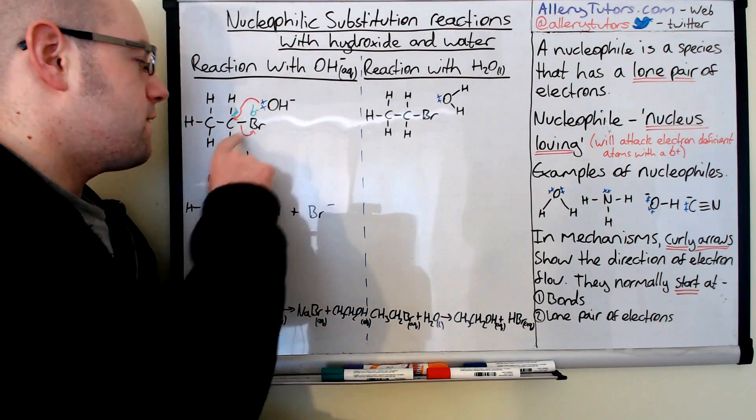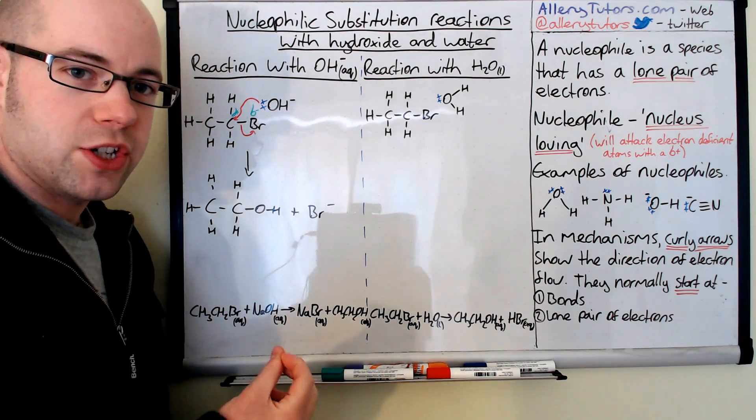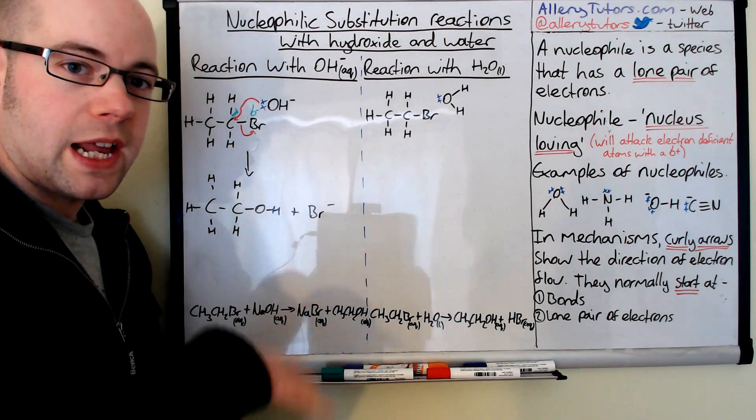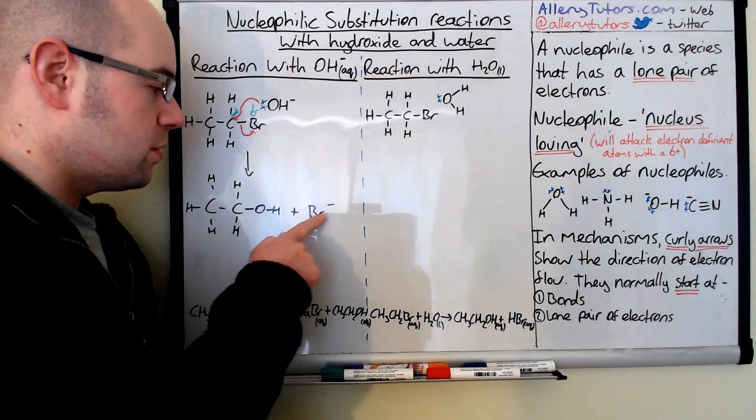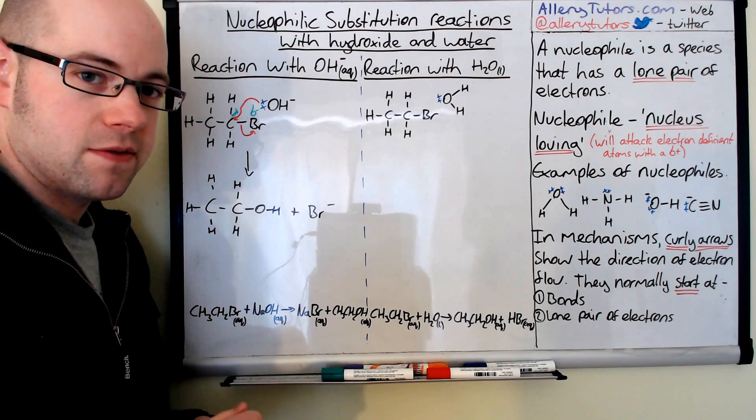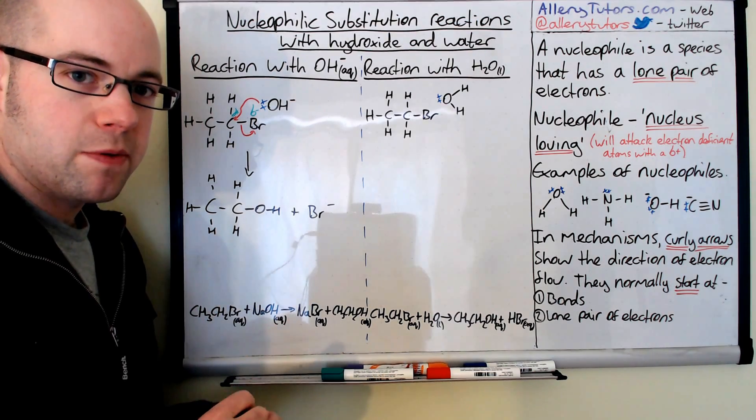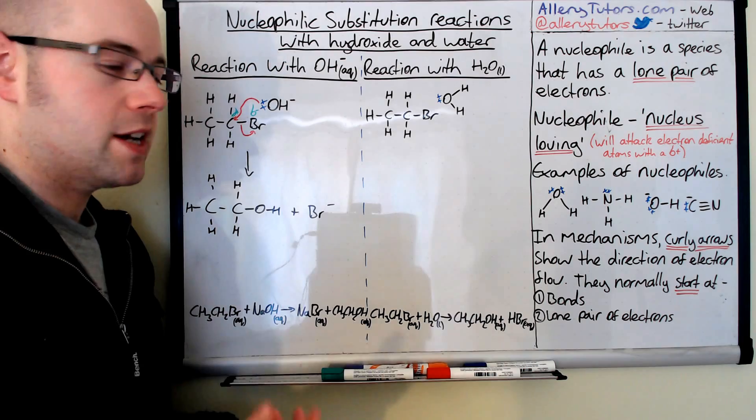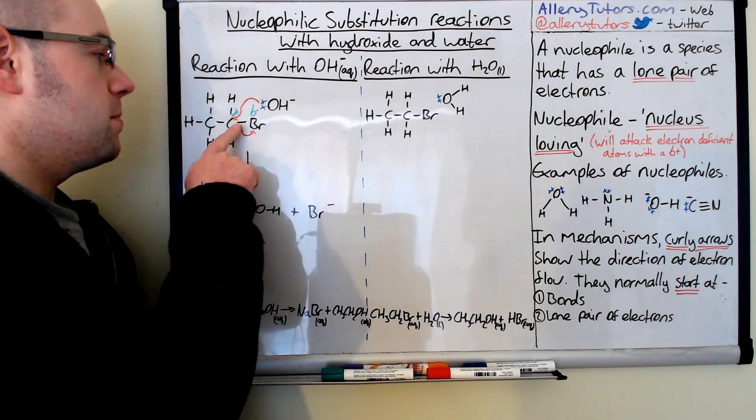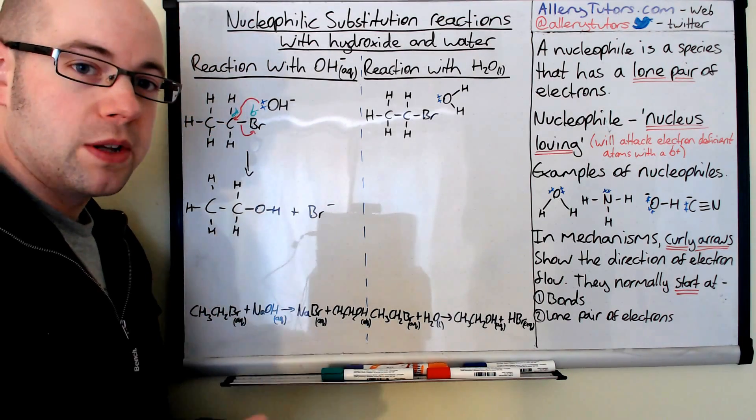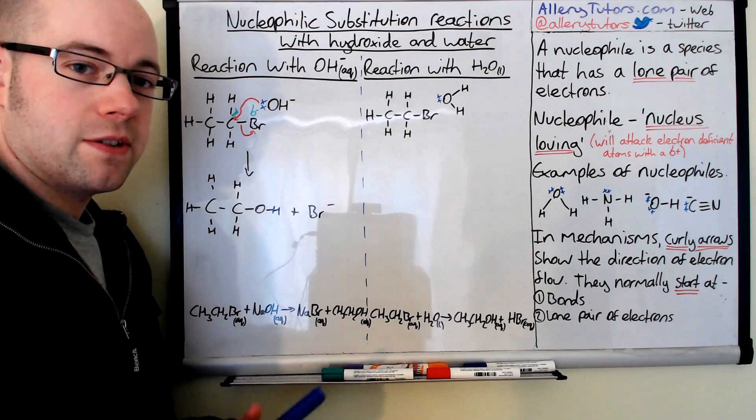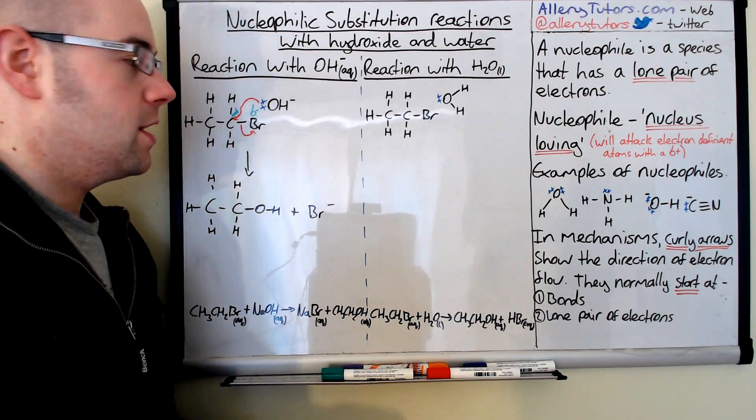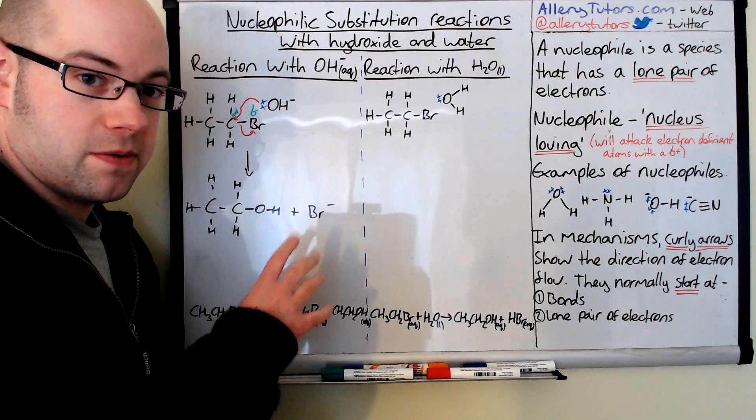We call this a fission reaction, bond fission. This is called heterolytic fission, because both electrons from the bond are going to the bromine, and that's why it has the negative charge. So if they ask about the type of bond breaking, it's heterolytic, meaning different, so both electrons are going to one side. There is homolytic fission, but that occurs when you have radicals and UV light, which we'll go on to later in a different video.